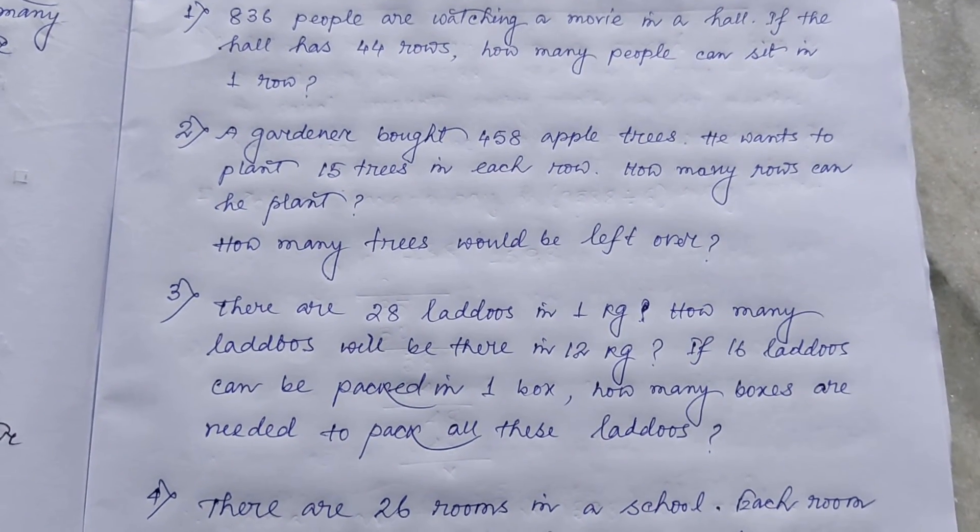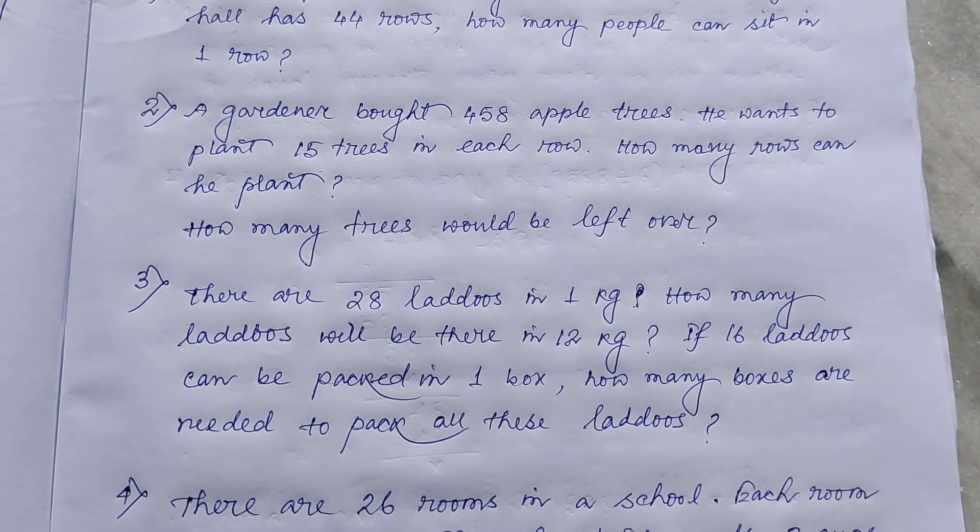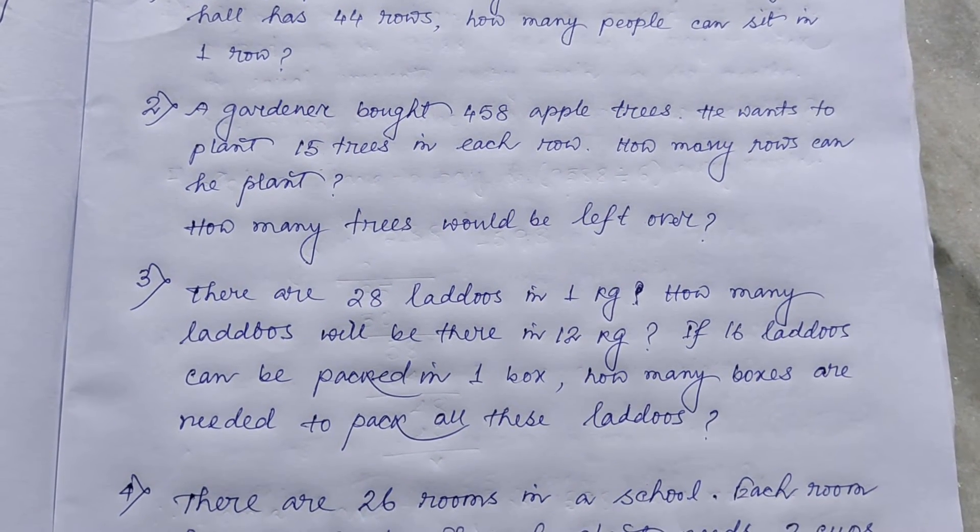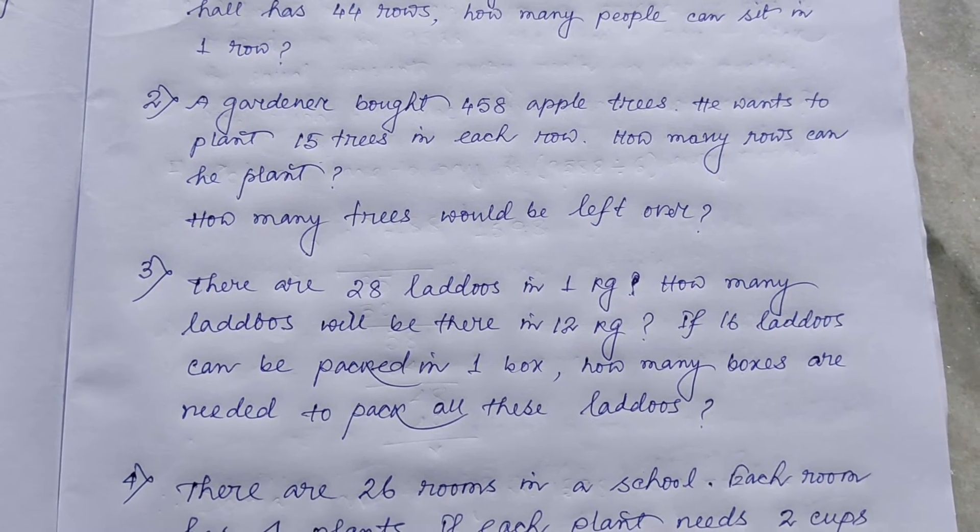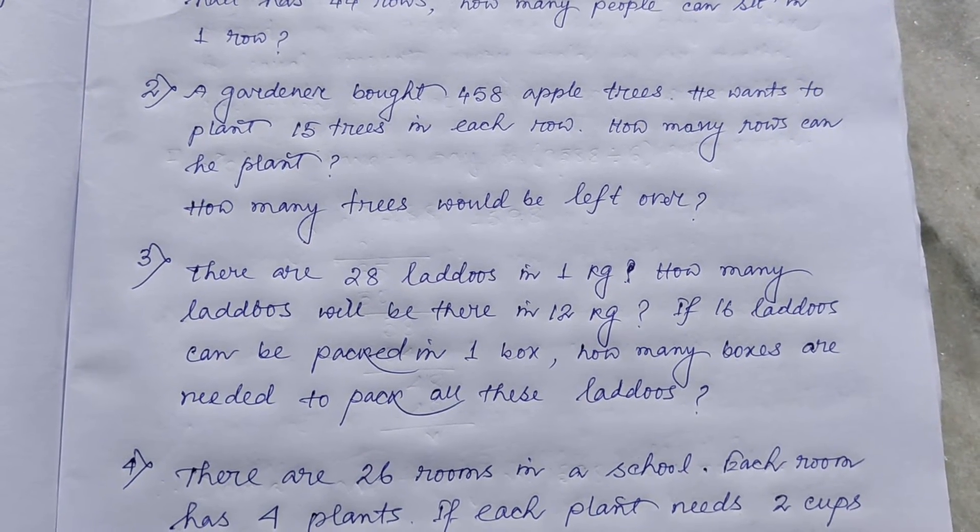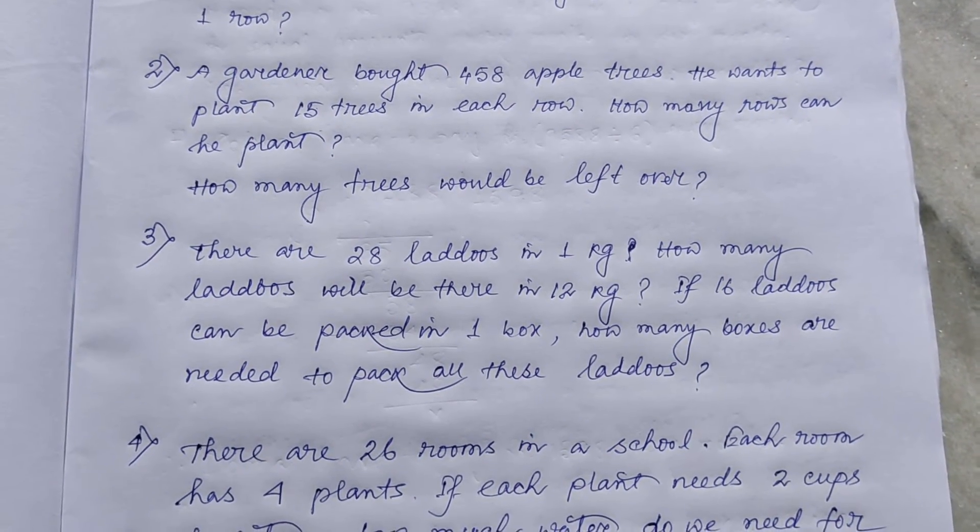Number 2. A gardener bought 458 apple trees. He wants to plant 15 trees in each row. How many rows can he plant? Second part. How many trees would be left over?